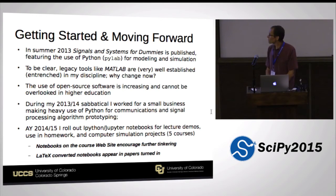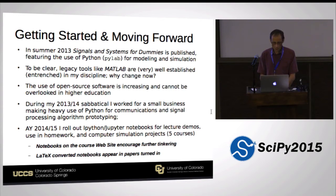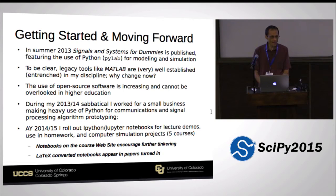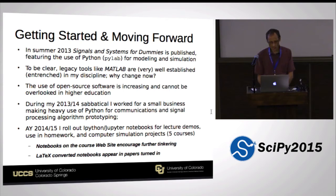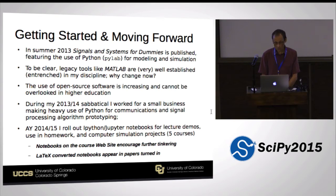How did I get started? In the summer of 2013, a book was published called Signals and Systems for Dummies — a book I was commissioned to write. I didn't ever think I'd write a Dummies book, but an agent came and found me and I agreed to it. The book came out two summers ago but was started about one year prior to that.